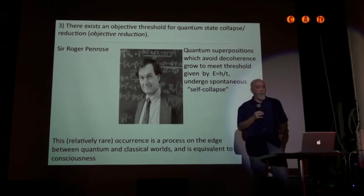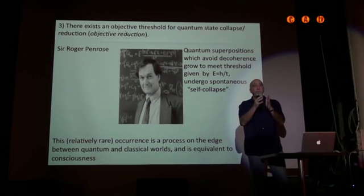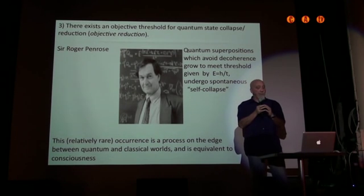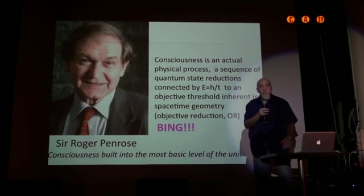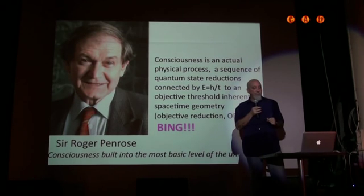Another possibility was put forth by Roger Penrose, Sir Roger, who said that there's an objective threshold for quantum state collapse or reduction and a superposition, a separation in the universe, would only go so far and then collapse to one state or the other, that these separations were unstable and that this could be given by a simple equation, E equals h over T, and that this relatively rare occurrence is a process on the edge between the quantum classical worlds and is equivalent to consciousness. So he put the bing into science. He said that every time there's this particular type of self-collapse, quantum state reduction, there would be a moment of consciousness, which suggested that since he was tying this to fundamental reality, that consciousness or its precursors are built into the most basic level of the universe.